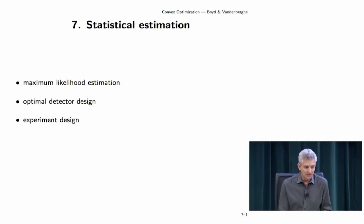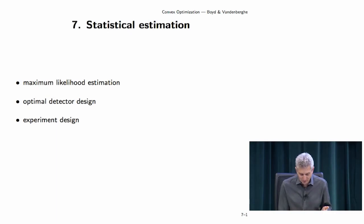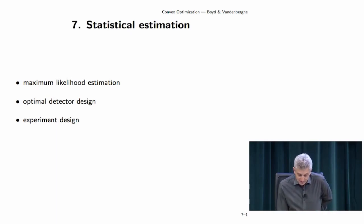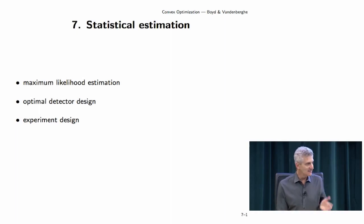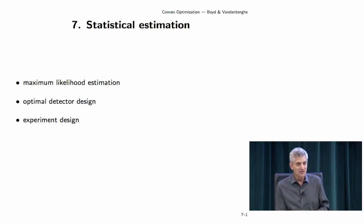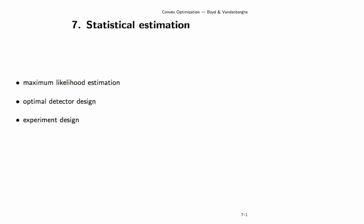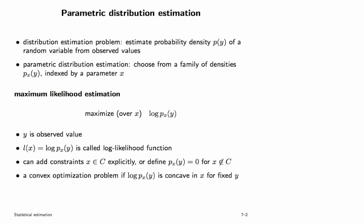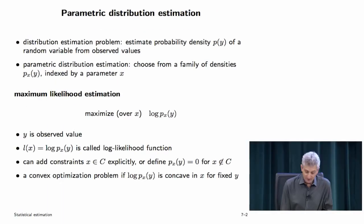We'll move on to another section — a whirlwind tour of some interesting problems in statistical estimation. As with the other lectures, there's much more in the book; we expect you to read all of it. Homework will cover other things, but we'll look at some big-picture questions here and some interesting examples. We'll start with the idea of parametric distribution estimation.